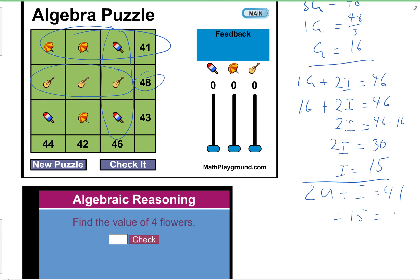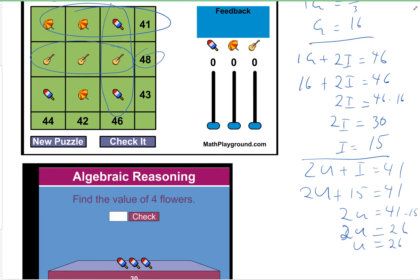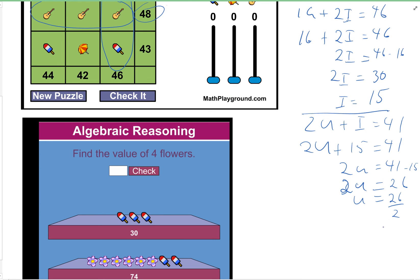So two umbrellas are going to have to be 41 take away 15, which is going to give me 26. Well, two umbrellas is equal to 26, so one umbrella is 26 divided by 2, which is 13.